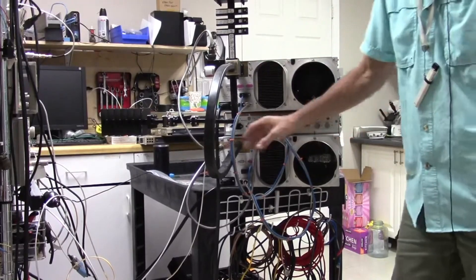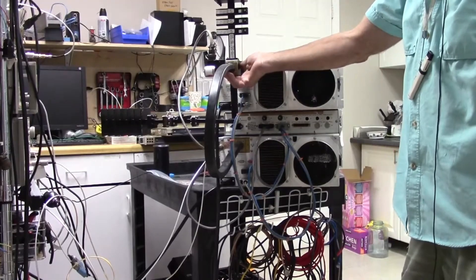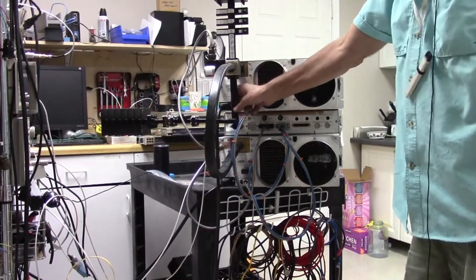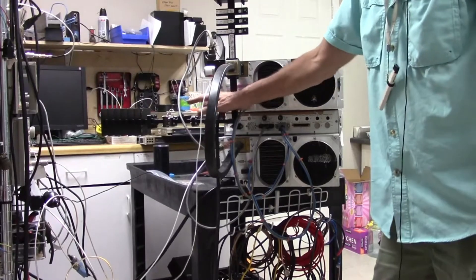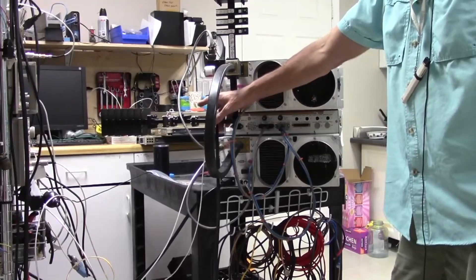HPA number one, it's plumbed just through twist flex into the baseball switch. Here we have a dummy load that's shipping with the system. It's a dummy load and a cross guide coupler that is a 750 watt dummy load.